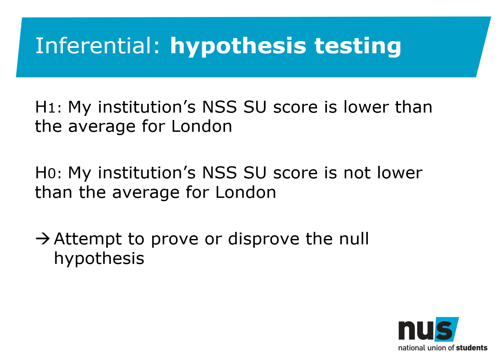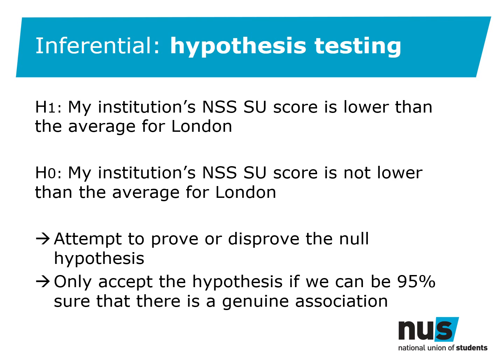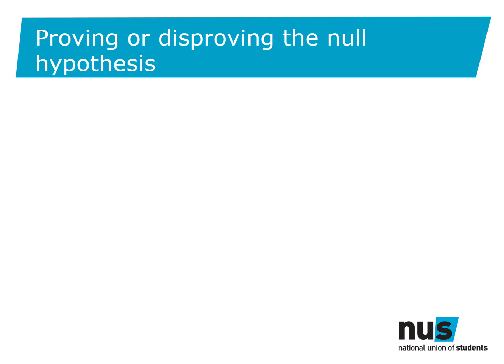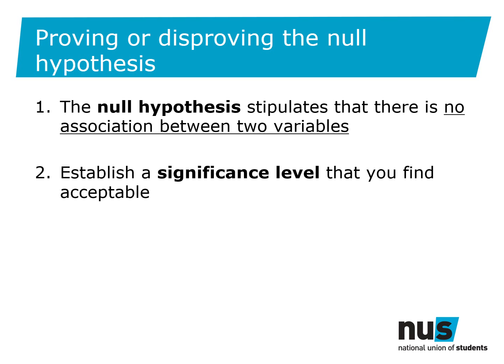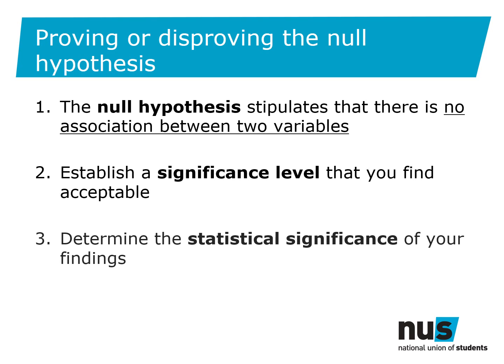The question we're asking in our analysis is whether, given the data we've collected and analysed, we'd be likely to see those numbers if the null hypothesis was true. So using this example, we would ask: assuming the null hypothesis is true — that our students' union does not score lower than the average for London — is this likely? The answer is it is not likely if we found an association in the data. In statistics, we put a confidence level of 95% around this — we only reject the null hypothesis if we can be 95% sure that the association is a real one. So to take a statistically valid approach: start with a null hypothesis stating there is no relationship between two variables, establish a significance level (commonly 95%), test the significance of your findings, and if you can be 95% sure your hypothesis is accurate, reject the null hypothesis — otherwise it stands.